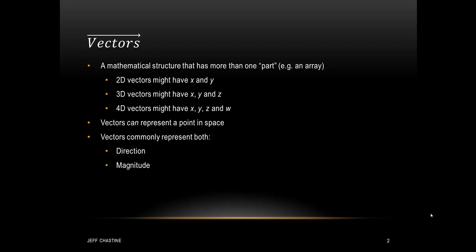And we could extend this and have a 4D vector, which might have parts x, y, z, and w. Now realize that they don't have to be named x, y, z, and w — they could be named anything. It's just what I've used here.